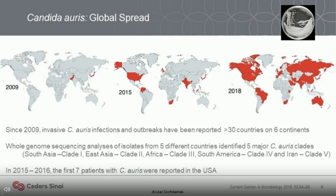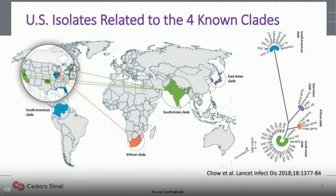Phylogenetic studies have identified five predominant strain populations belonging to different clades, each with geographical ties to their first report. Clade 1 is the South Asian lineage, Clade 2 the East Asian lineage, Clade 3 the African lineage, and Clade 4 the South American lineage. Recently in 2019, a fifth clade was identified in Iran from an ear canal, distinct from the other four lineages. Let's take a closer look at what is going on specifically related to the US.